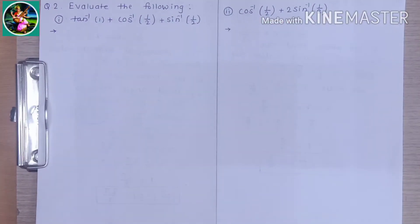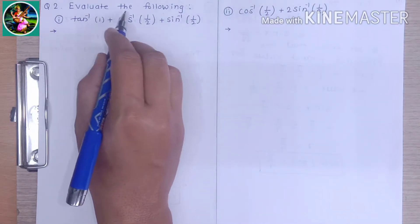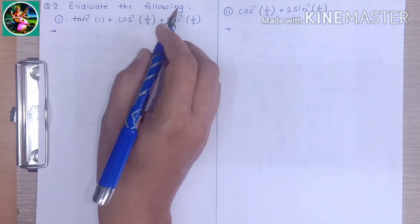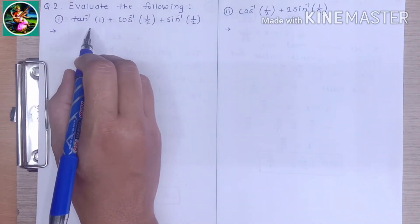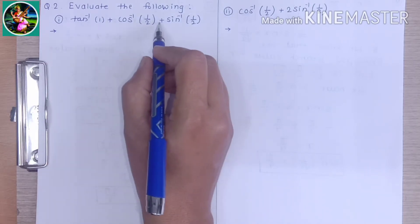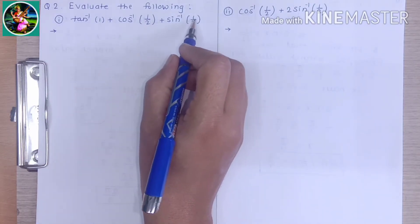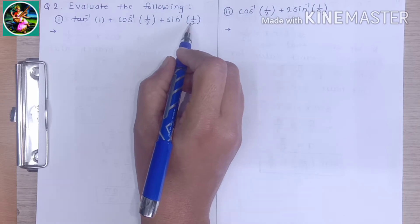Hello, in this session we are going to solve question number 2 from exercise 3.3. The question says: evaluate the following. The first example is tan inverse 1 plus cos inverse of 1/2 plus sin inverse of 1/2.